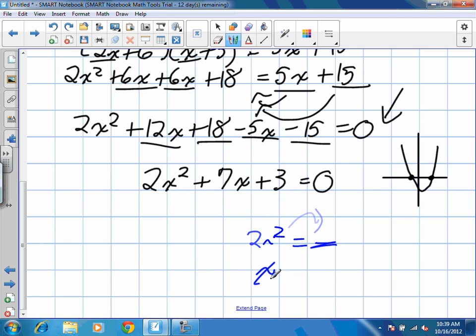But the reason we're factoring is because I have an x squared and an x, which means it's not easy to separate the x, to isolate it by itself. So we're going to do this by factoring.